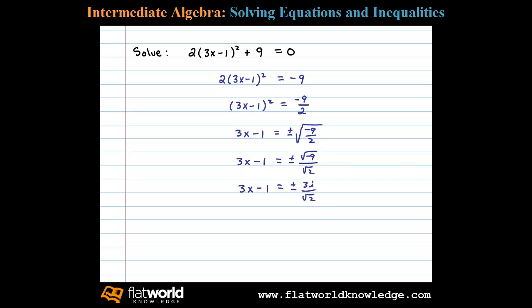Which can be rationalized if I multiply numerator and denominator by the square root of 2, and that leaves us with 3x minus 1 equals plus or minus 3i times the square root of 2 over the square root of 4, which is 2.